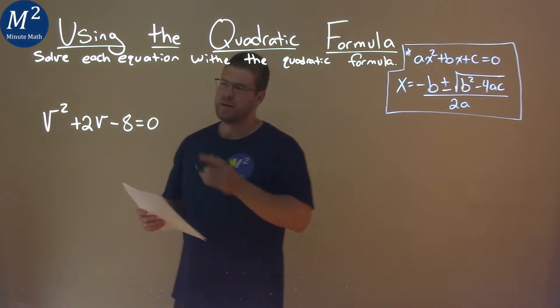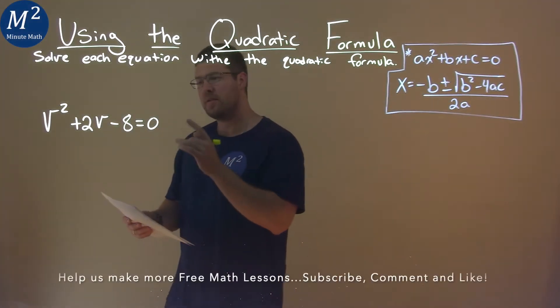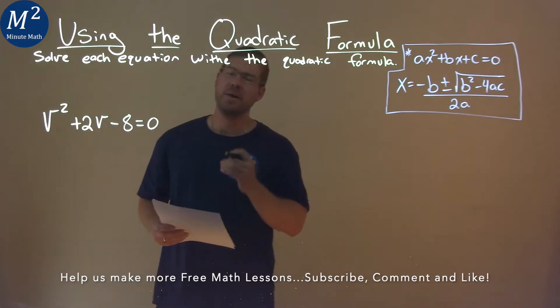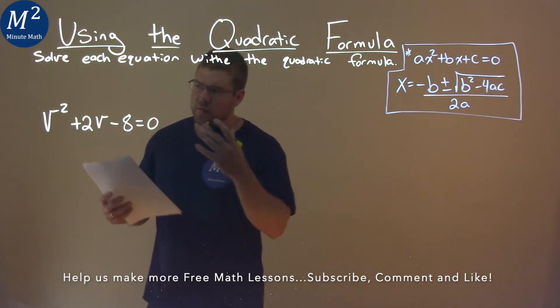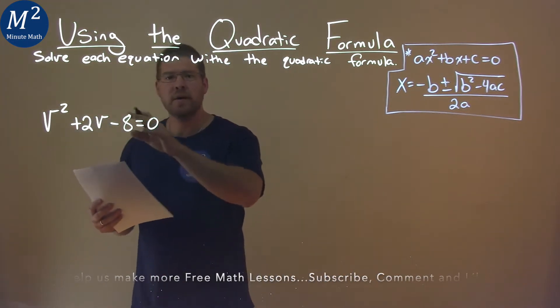We're given this problem right here, v squared plus 2v minus 8 equals 0, and we need to solve this using the quadratic formula. Well, luckily for us, our quadratic is already set equal to 0.